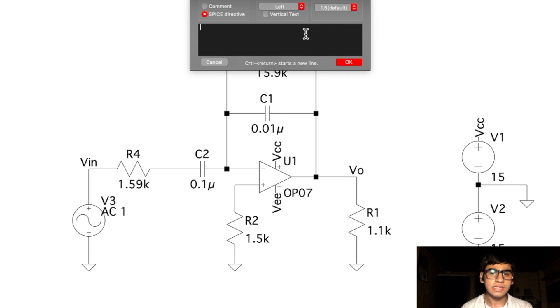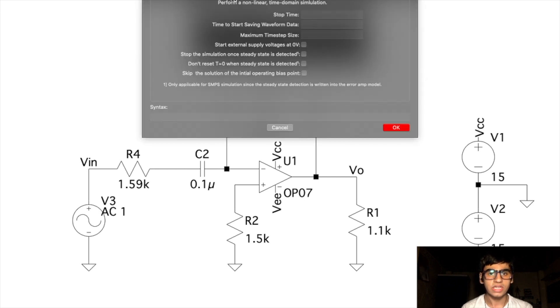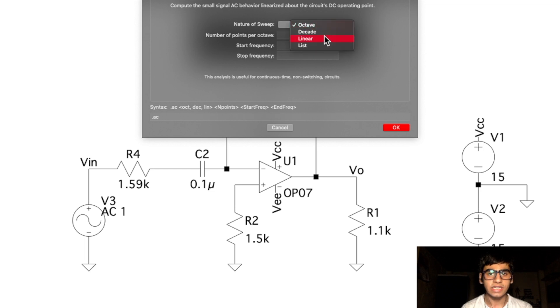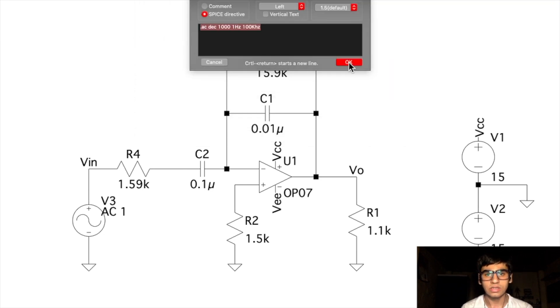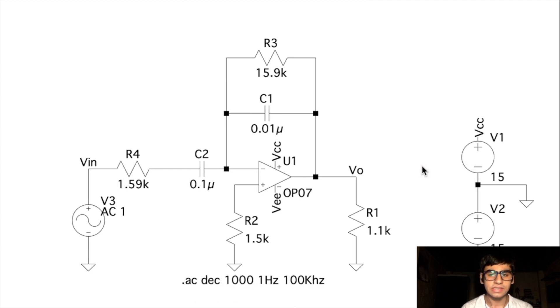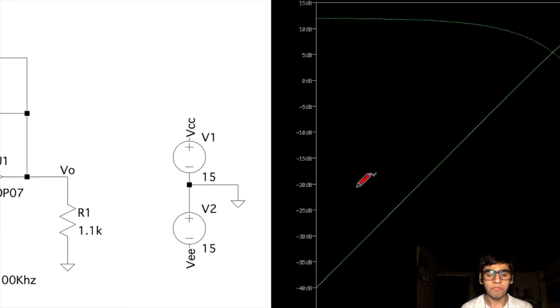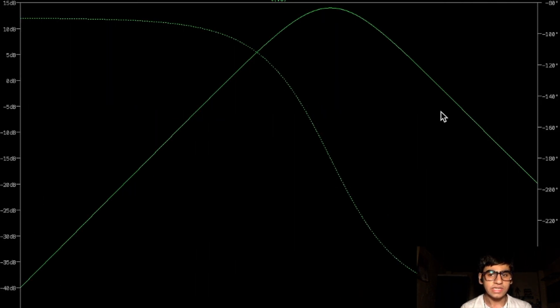Then we'll run an AC sweep analysis using the analysis command. For that go in the AC analysis tab, select nature of sweep as decade, 1000 points per decade, start frequency of 1 Hz and stop frequency of 100 kHz. If we run this simulation and probe the output signal, we'll get the frequency response.